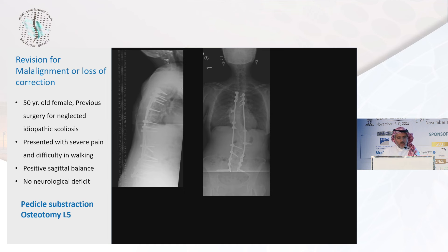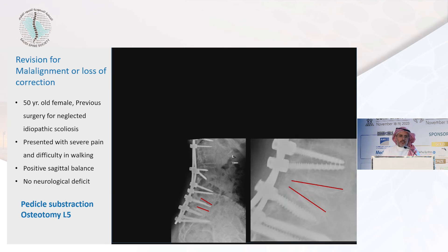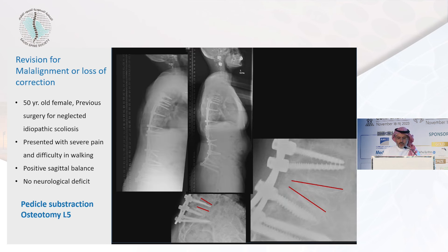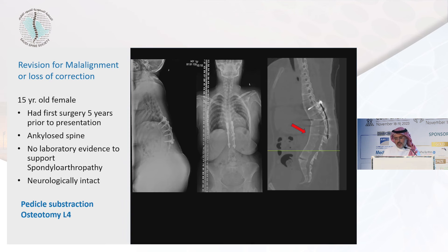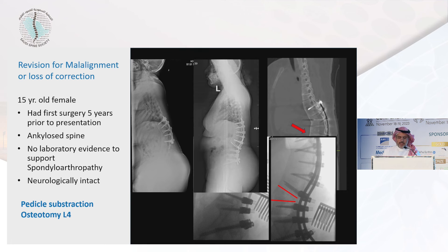This patient, 50 years old, had previous surgery for neglected idiopathic scoliosis, presenting with difficulty walking and forward posture. Her L5 pedicles are trapezoid in shape, so the only way to address her deformity is by vertebral subtraction osteotomy at L5 to restore sagittal balance. Another patient had surgery years ago to stop her kyphosis. Her spine is completely ankylosed anteriorly, so there's no option except vertebral subtraction osteotomy. We went to L4, moving away from the previous surgery and scar, to achieve better alignment.